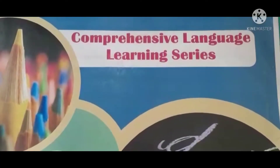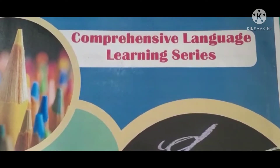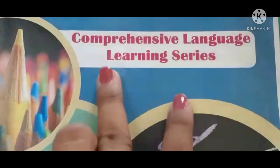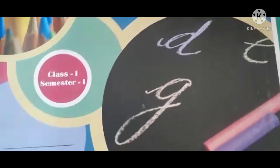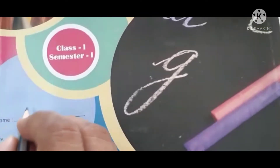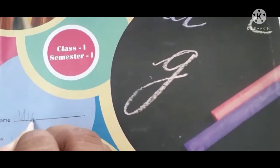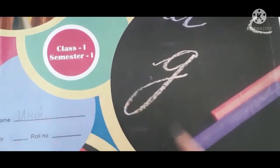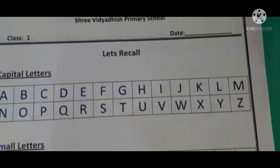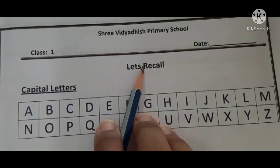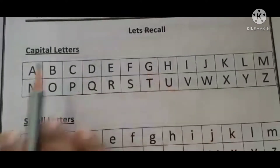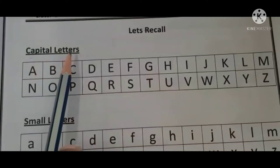So students, now open your Comprehensive Language Learning Series Class 1 Semester 1. First of all, write your name over here. Then open the first page. You are having let's recall of alphabets and it is given with capital letters.